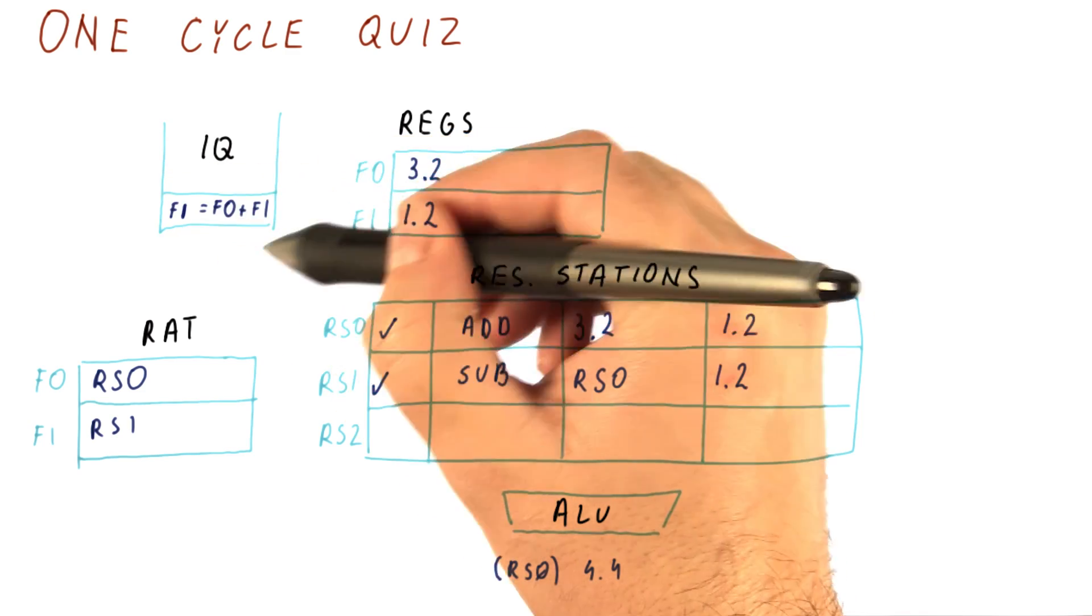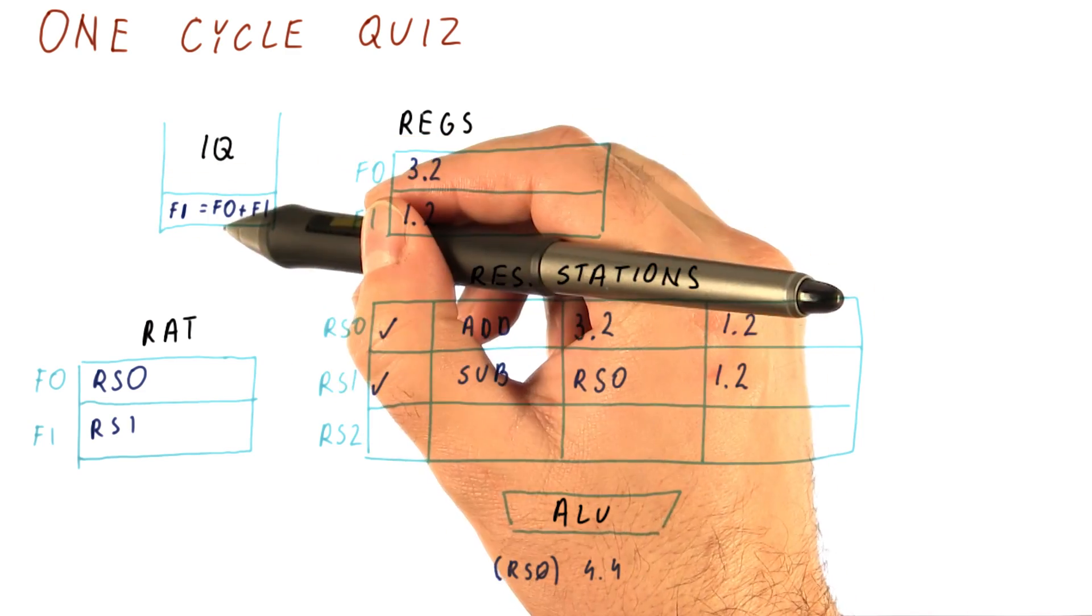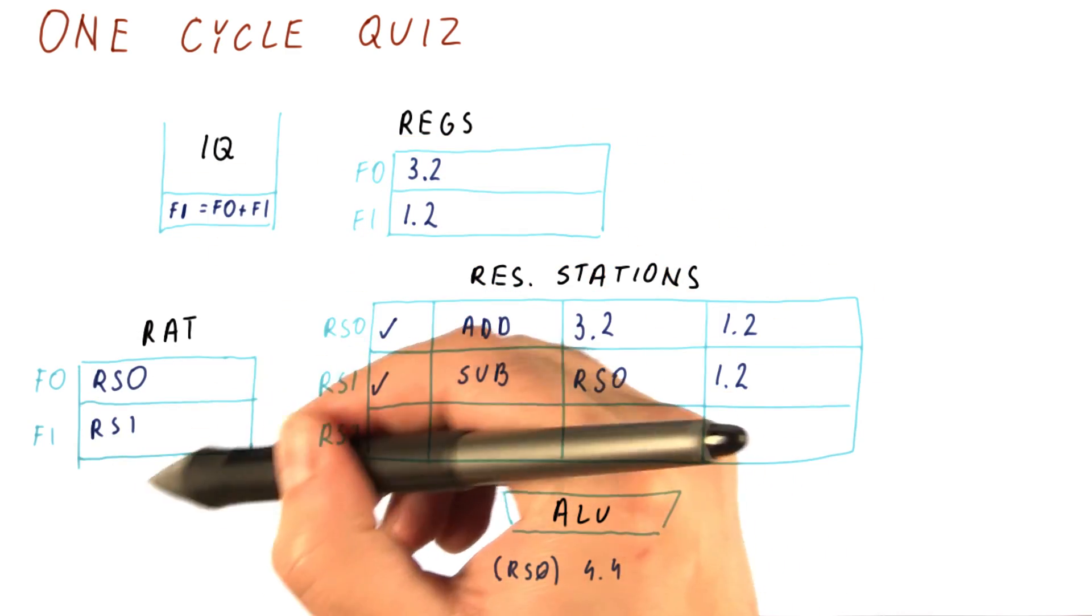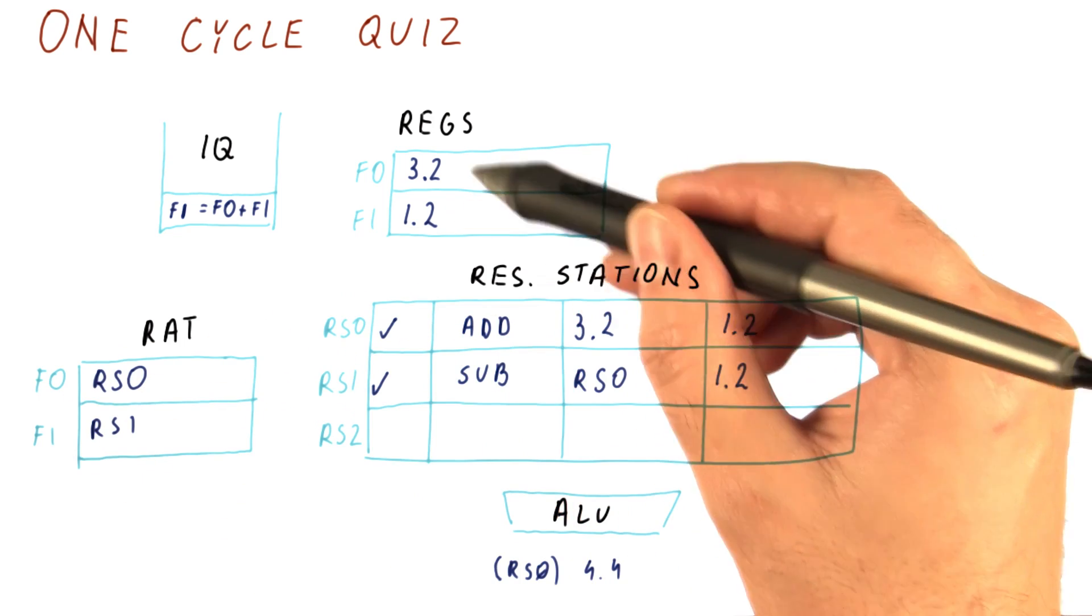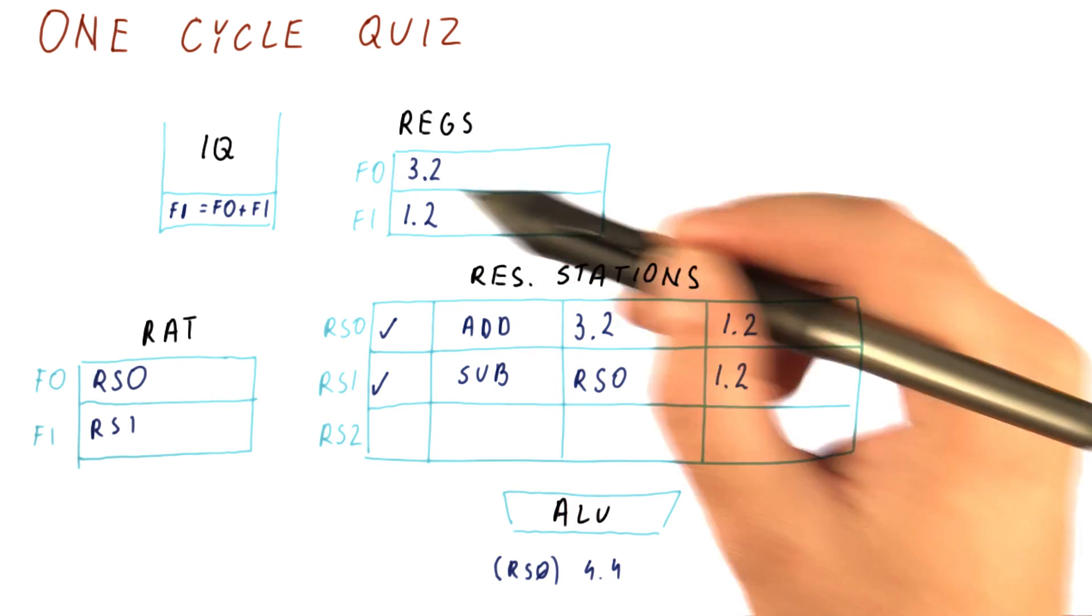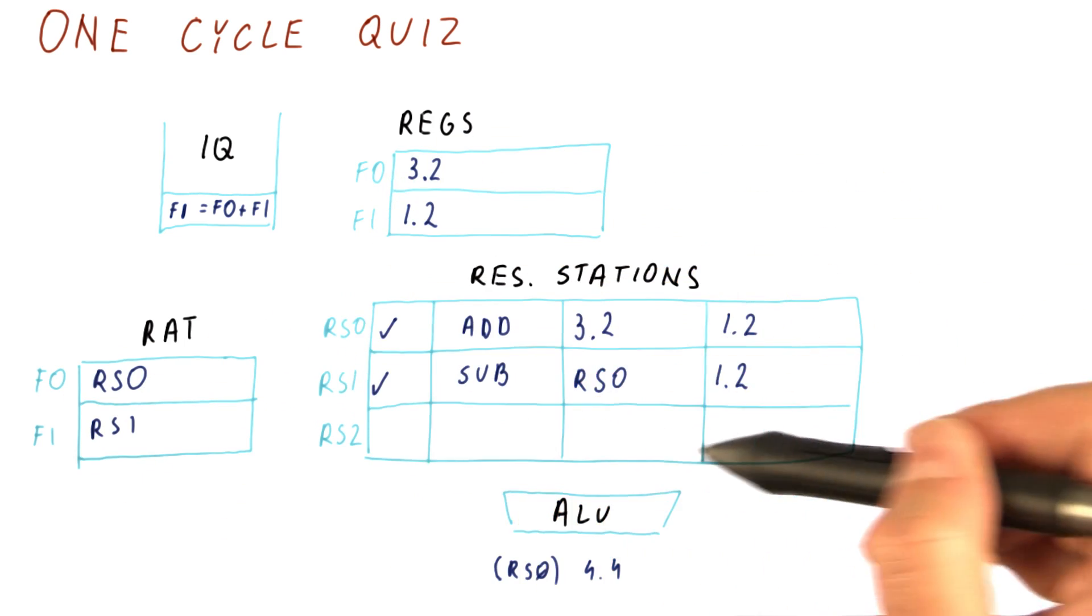We have an instruction that is waiting to be issued in the instruction queue. This is the contents of the RAT. These are the values for the registers. These are the reservation stations.